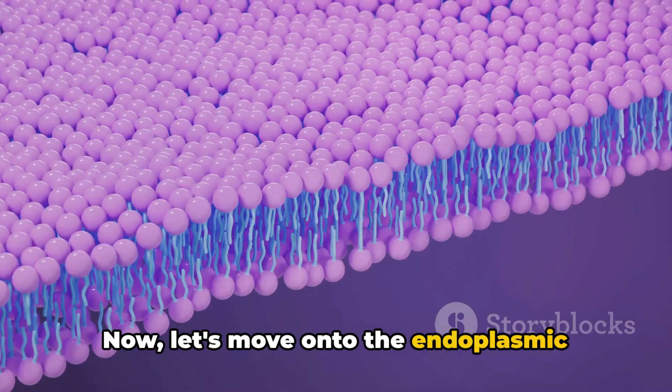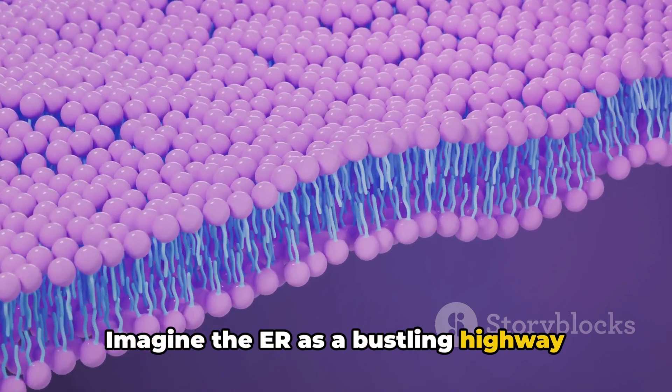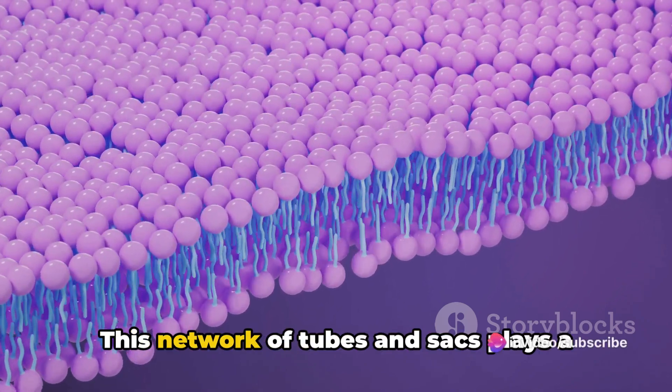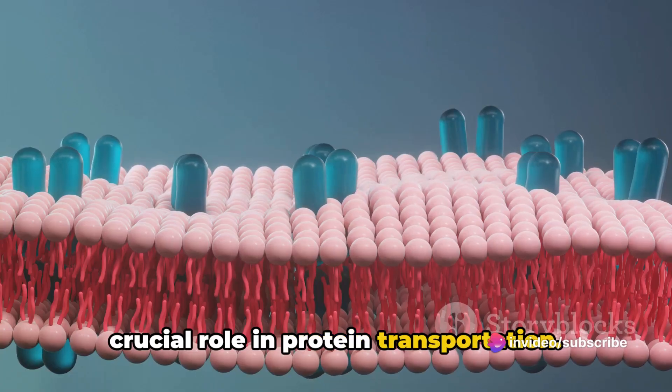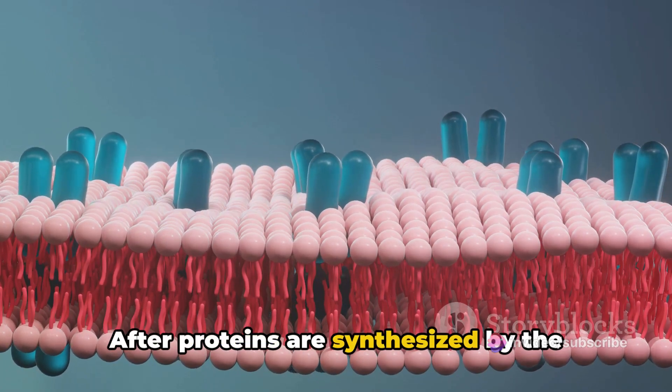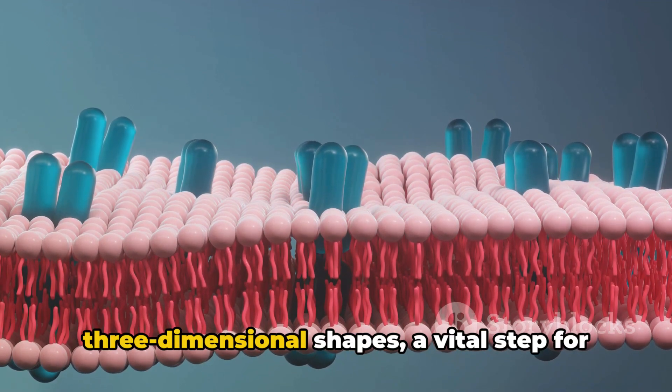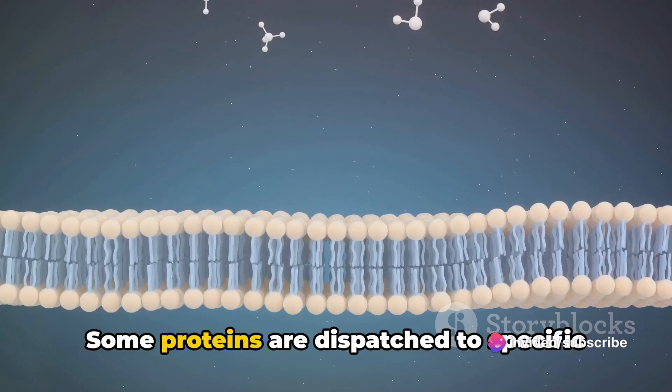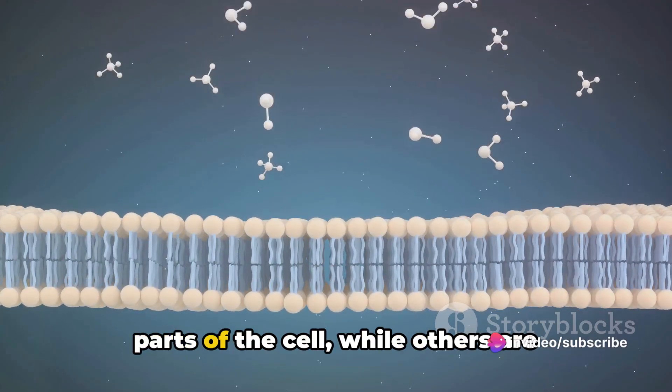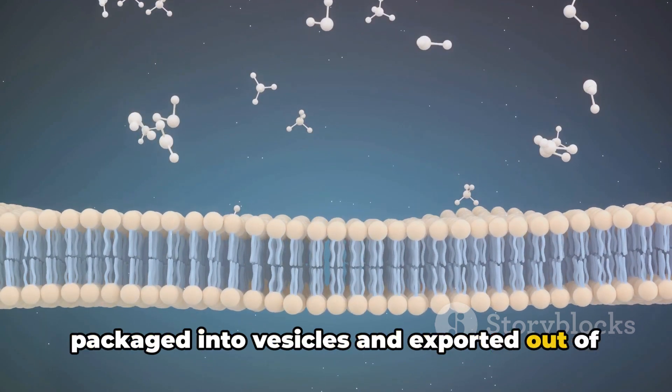Now let's move on to the endoplasmic reticulum or ER. Imagine the ER as a bustling highway within the cell. This network of tubes and sacs plays a crucial role in protein transportation. After proteins are synthesized by the ribosomes, they are sent to the ER. Here, they are folded into three-dimensional shapes, a vital step for their function. Some proteins are dispatched to specific parts of the cell, while others are packaged into vesicles and exported out of the cell.